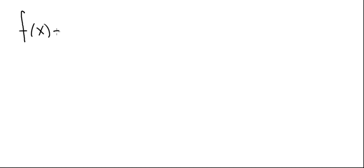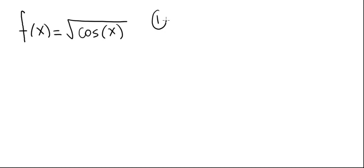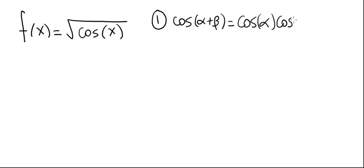We're going to use the definition of the derivative to differentiate f(x) equal to the square root of cosine of x. To do it we'll need the following results. The first result is the trig identity: cosine of alpha plus beta is equal to cosine of alpha times cosine of beta minus sine of alpha times the sine of beta.